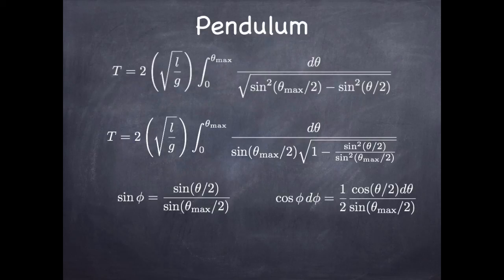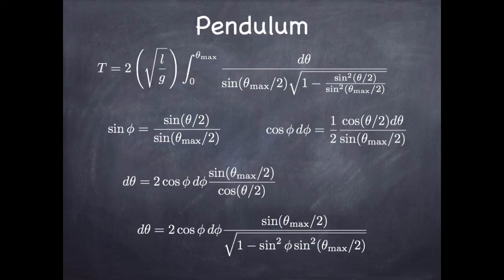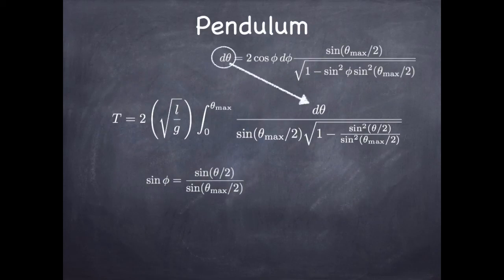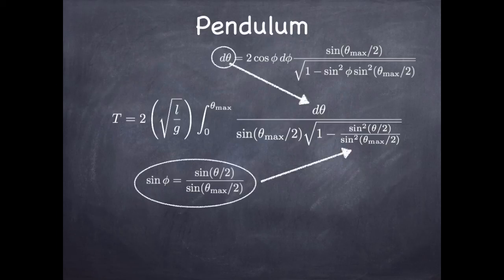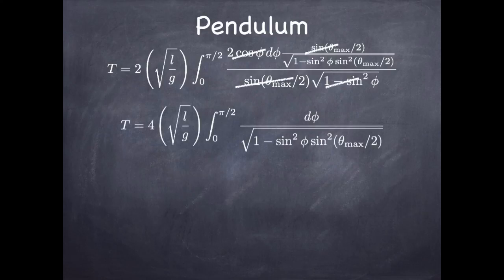In this change of variables, the differentials look complicated: sinφ has differential cosφ dφ, and sin(θ/2) has differential cos(θ/2)dθ/2 by the chain rule. But if we solve for dθ, substitute back in terms of φ, and move things around, we find that sin²(θ/2)/sin²(θ_max/2) is just sin²φ. After the substitution, sin(θ_max/2) terms cancel from top and bottom, and cosφ in the numerator cancels with √(1 − sin²φ) in the denominator.